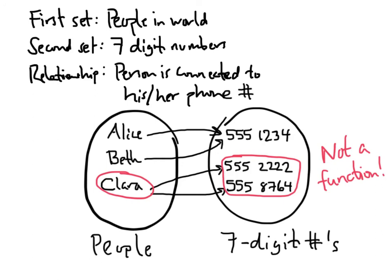There's another problem with this non-function. Maybe there's another person in the world named Dave, and Dave simply doesn't have a phone — no cell phone, no home phone. In that case there is no arrow coming out of Dave's point in the first set, and that's another reason why this relationship is not a function. The key idea is that for a relationship between two sets to be a function, everything in the first set has to have one and only one arrow coming out of it. So Clara causes a problem, and Dave also causes a problem. It's a perfectly fine relationship, but it's just not a function. Functions are special.